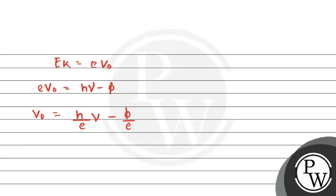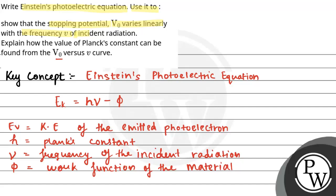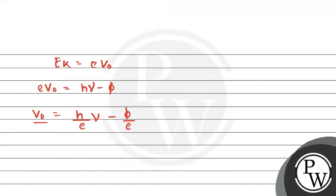This equation shows that the stopping potential V₀ varies linearly with the frequency ν of the incident radiation. The slope of the V₀ versus ν graph will be h/e. The y-intercept on the V₀ axis will be -φ/e.